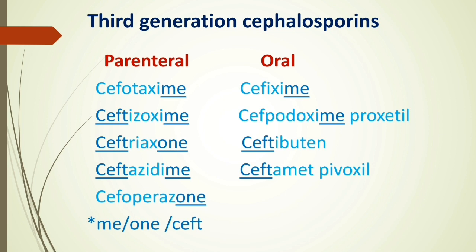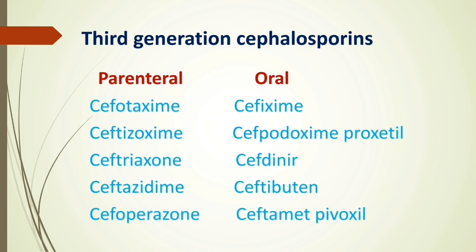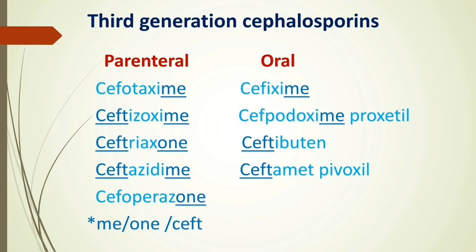Here is also an exception: the second generation cephalosporin cefuroxime ends with '-ime', but it is still a second generation cephalosporin. We can note that the second generation cephalosporins contain drugs with exceptional naming patterns — cefaclor starts with 'cepha' but is second generation, and cefuroxime ends with '-ime' but is also second generation. That is all about third generation cephalosporins.